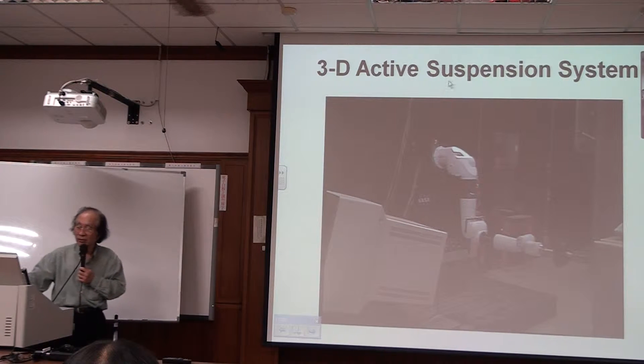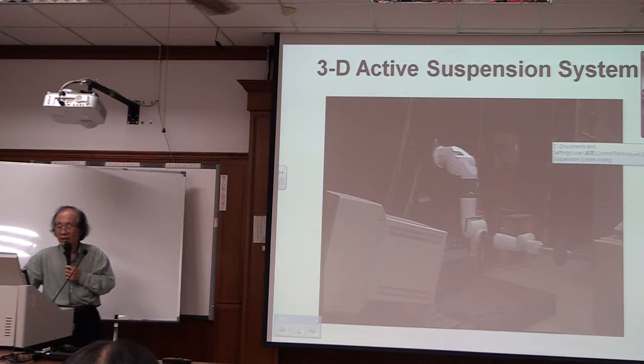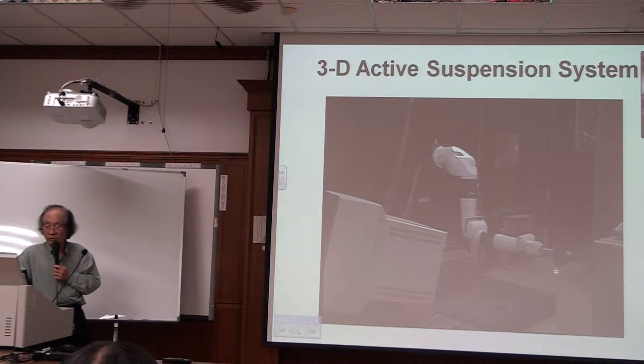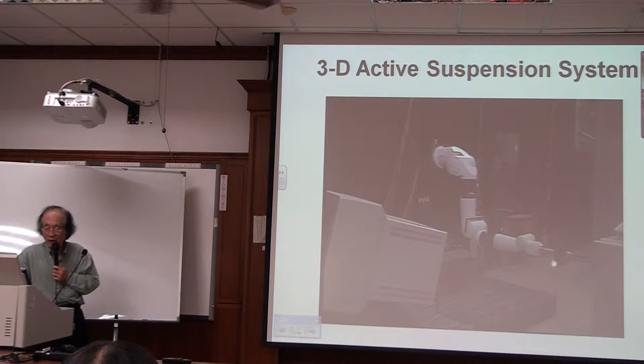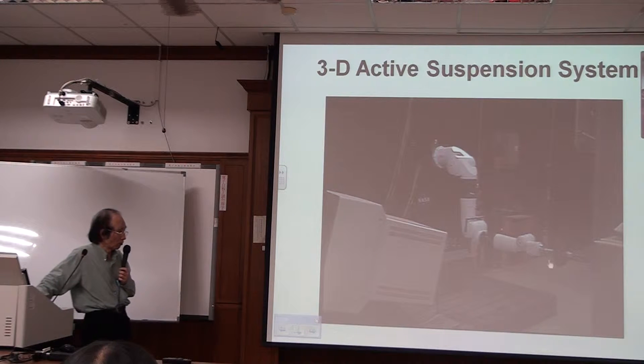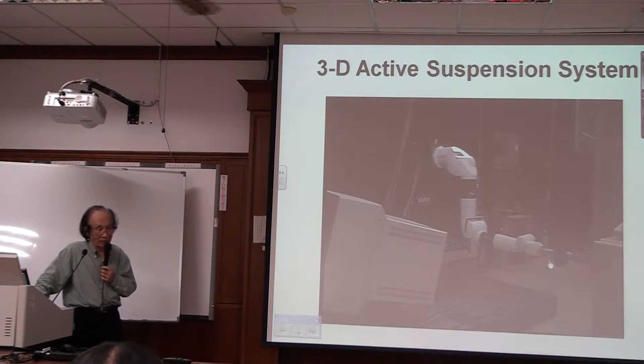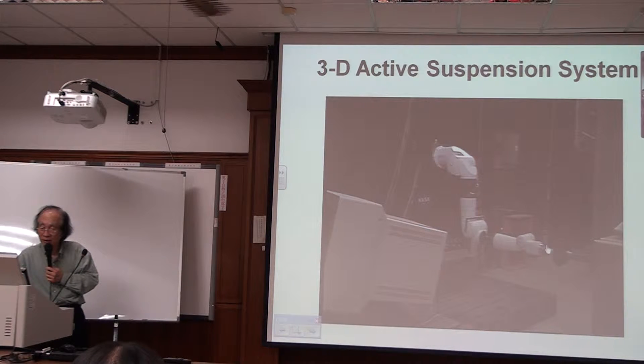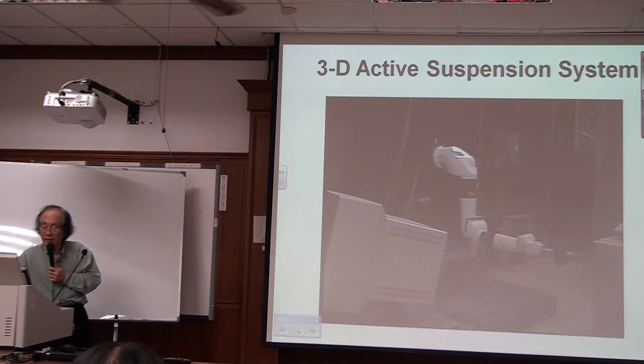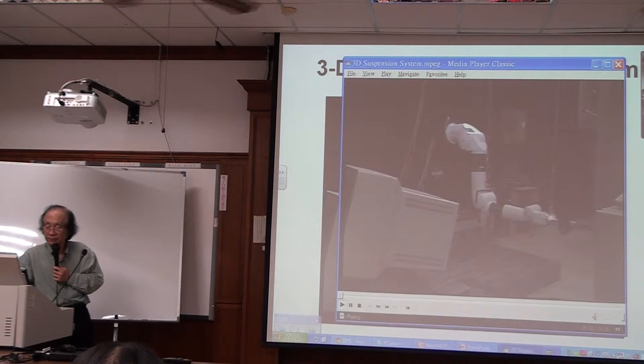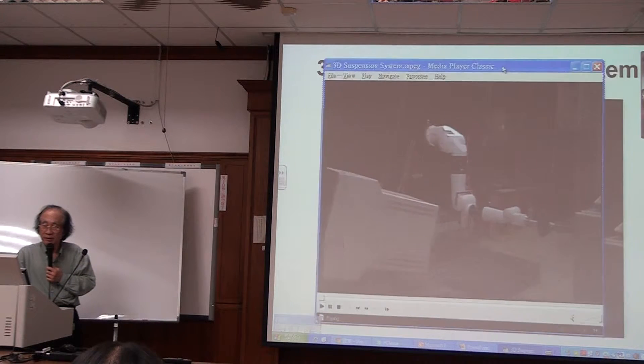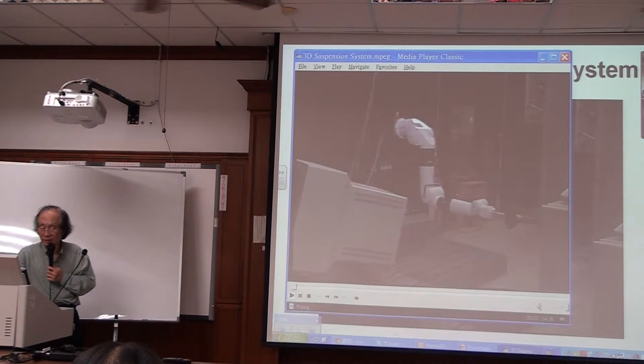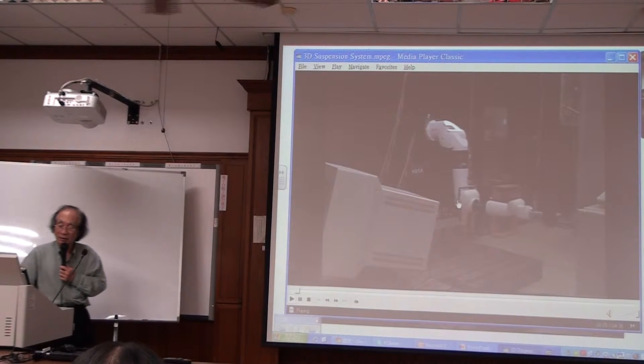That means we have to have a suspension system to counterbalance the weight of the arm of the robot. That's the way if you can see it here, there's a robot arm here. Let me show you some of the moving. This is, you know, more than 20 years ago movie. At that time, you don't have a digital camera for that.